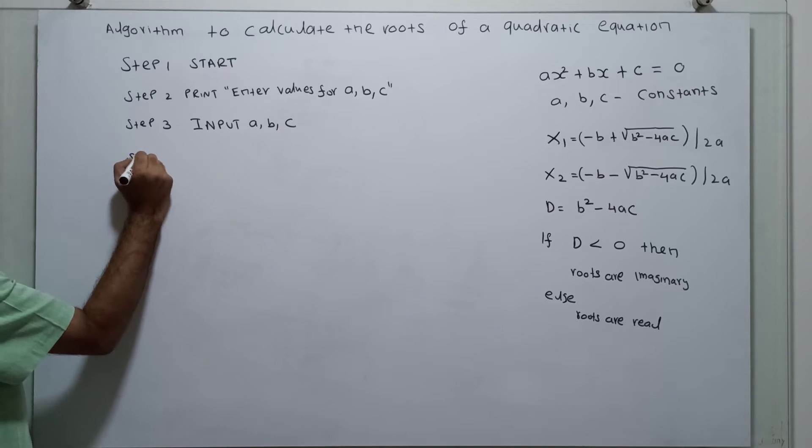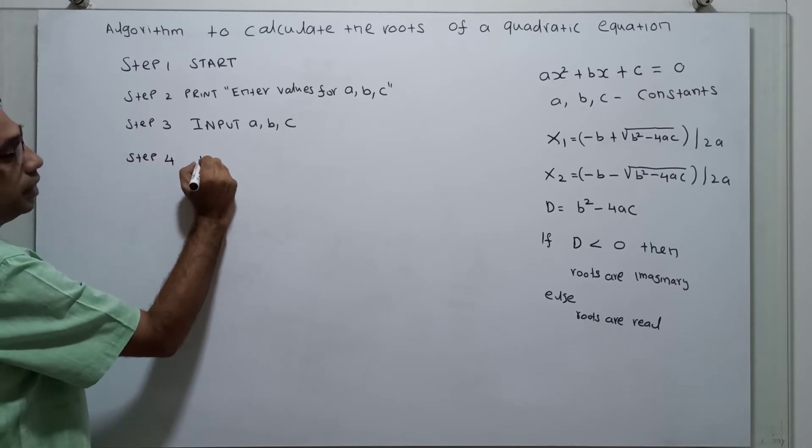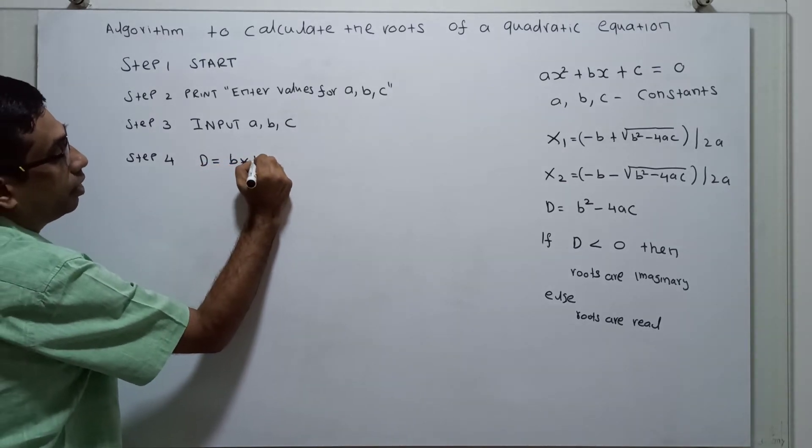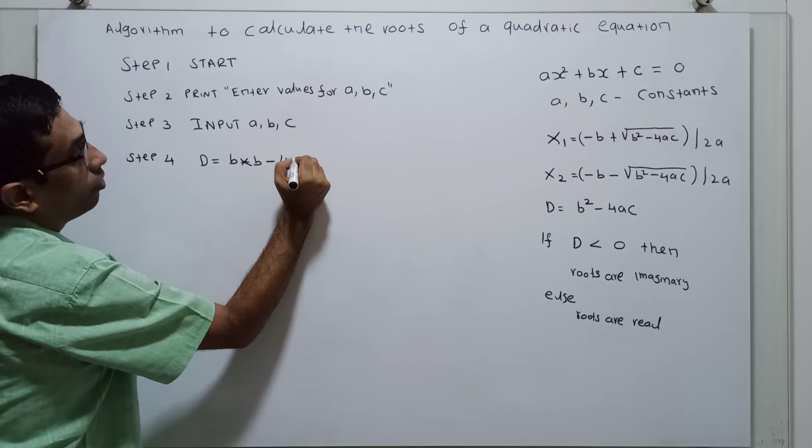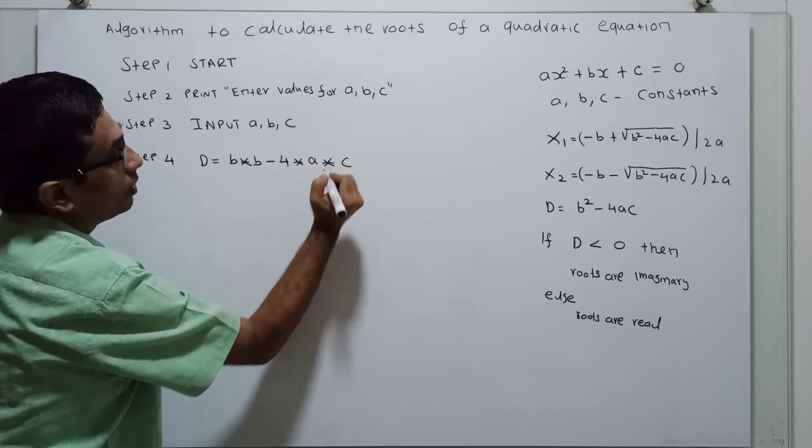Step 4: We have to calculate the discriminant value d equal to b star b minus 4 star a star c.